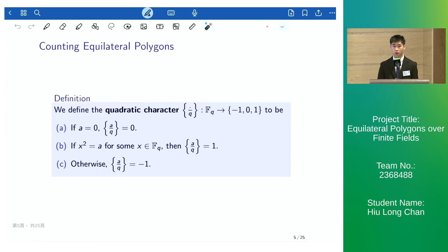Since not all elements have a square root in a finite field, we can define a quadratic character. If A is a square root, then the quadratic character returns 1, and otherwise the quadratic character returns minus 1.